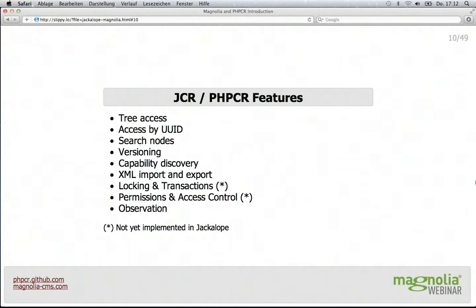Almost all of that is optional features. The standard is modular and there is a capability discovery built in. Your application could, for example, check: do we have versioning? If we have it, you offer the controls to work with versions, and if not, you just hide them.